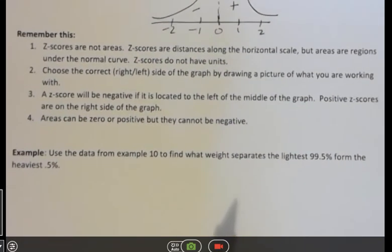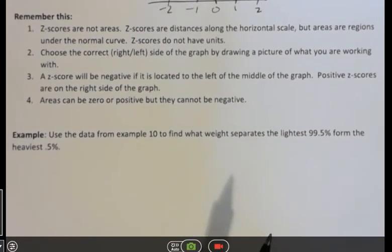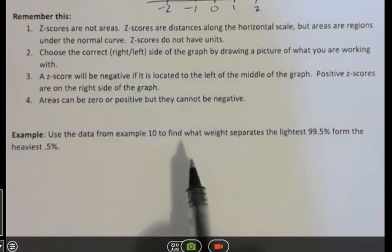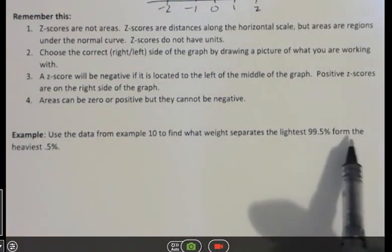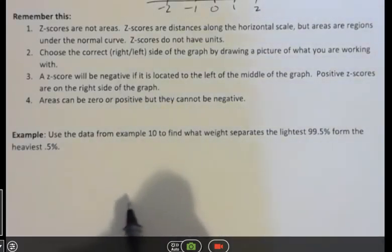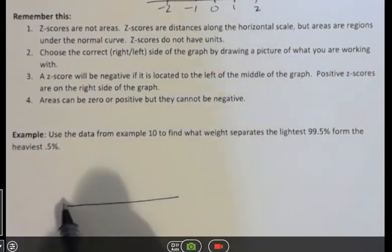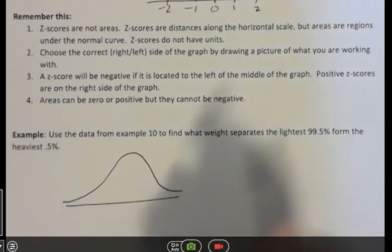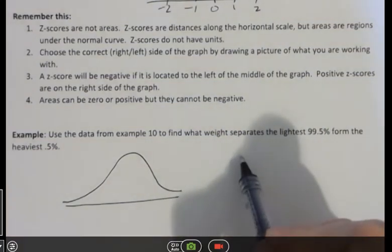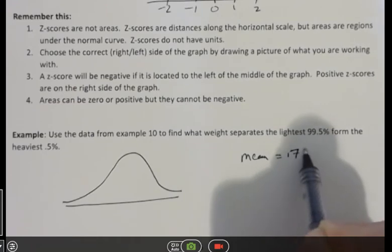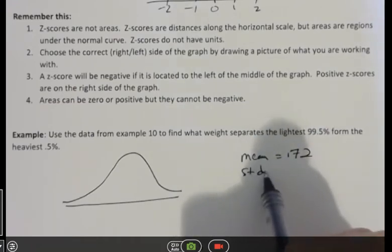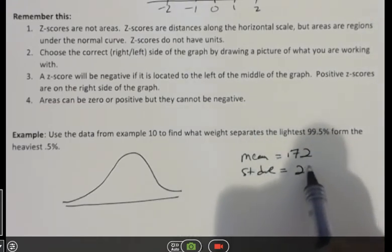And then the last thing on this particular video is use the data from example 10 that was above to find what weight separates the lightest 99.5% from the heaviest 0.5%. So remember, I will remember for you, but that our mean was 172 pounds and our standard deviation was 29 pounds.